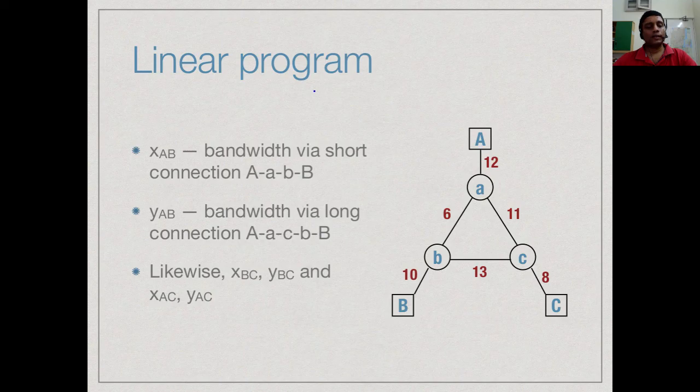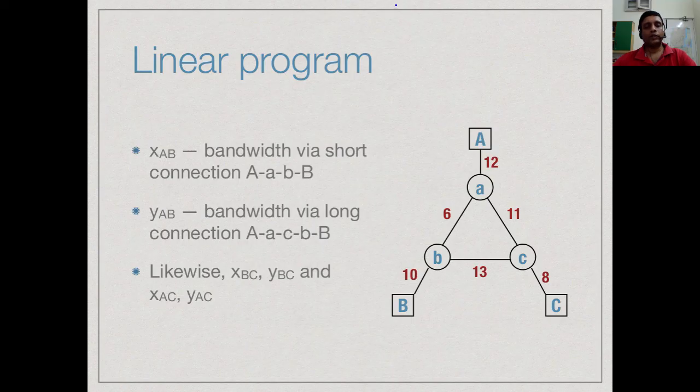As we have been seeing our aim is to set this up as a linear program. In this case what are the variables that we are going to use? Recall that we said that every connection has two routes.